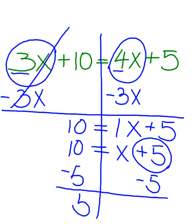10 minus 5 is 5 equals, I will bring down my x, 5 minus 5 will cancel out. I am left with my solution, x equals 5.